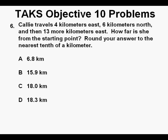Problem 6. Callie travels 4 kilometers east, 6 kilometers north, and then 13 more kilometers east. How far is she from the starting point? Round your answer to the nearest tenth of a kilometer. This problem, like many of ours, can be started by making a drawing. We'll start here with Callie.